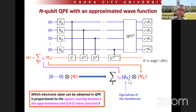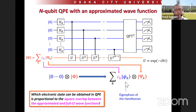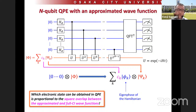If we want to calculate the ground state and the overlap of the ground state is about 0.9, we can obtain the ground state eigenphase with only 0.81 probability. So if we perform this n-qubit QPE 100 times, we can observe the ground state about 81 times, but 19 experiments will result in obtaining an excited state. The quality of the approximate wave function directly affects the measurement outcome.